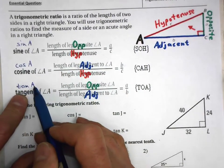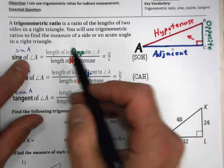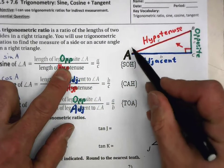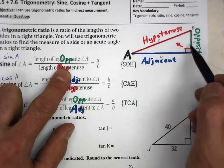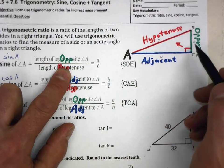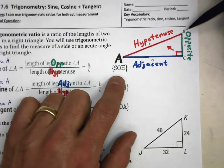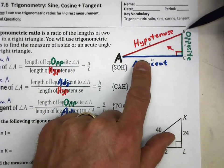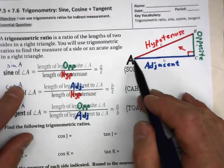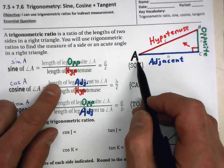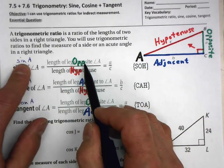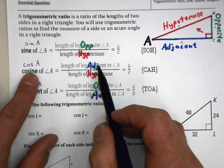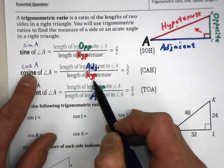Tangent of angle A. The sine of an angle is always the length of the opposite side. Here is angle A, and in reference to angle A, this is the opposite side. If I were doing the sine of angle B, this would be the opposite side of angle B. So it does matter which angle you're working from. Sine is opposite over hypotenuse; cosine is the adjacent side over the hypotenuse.